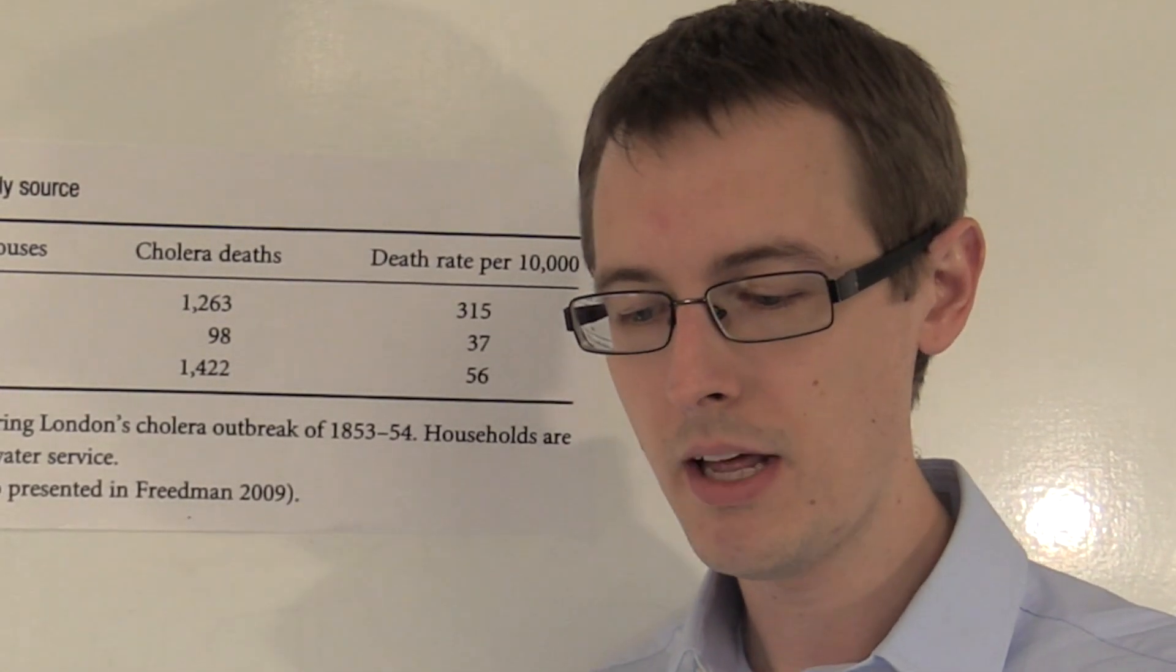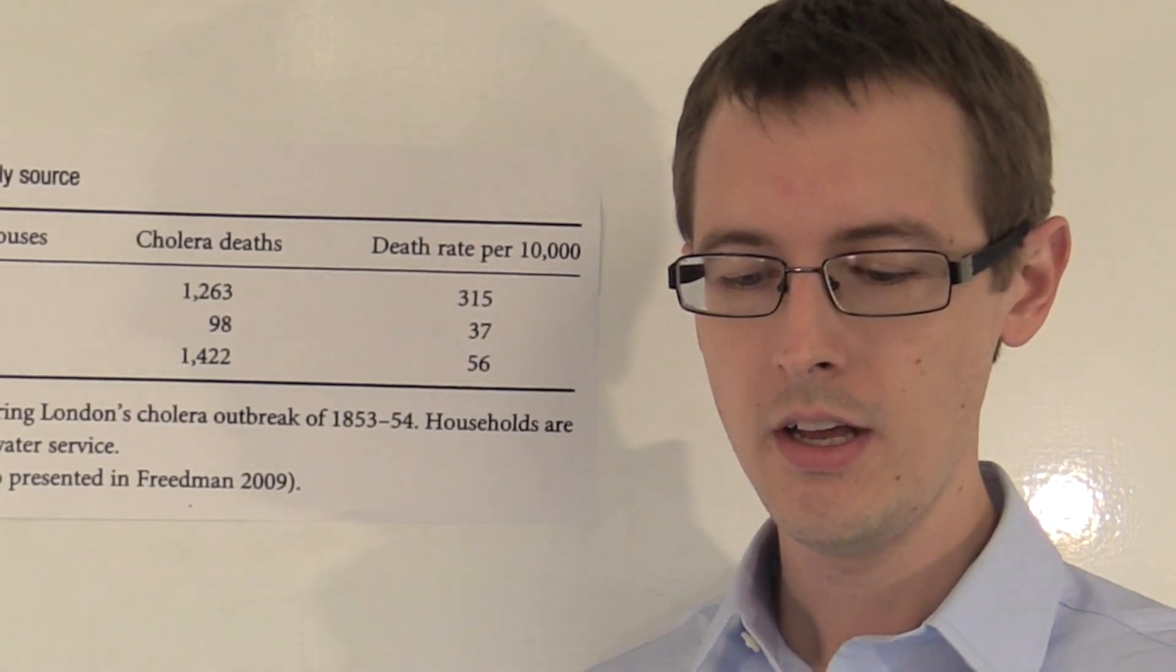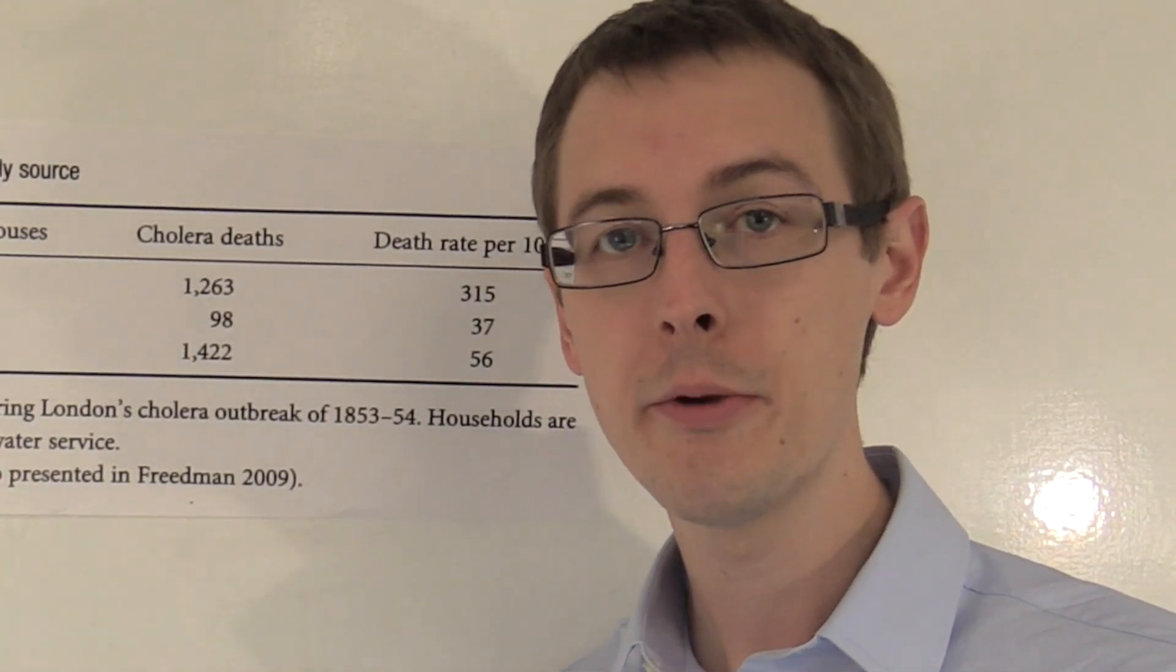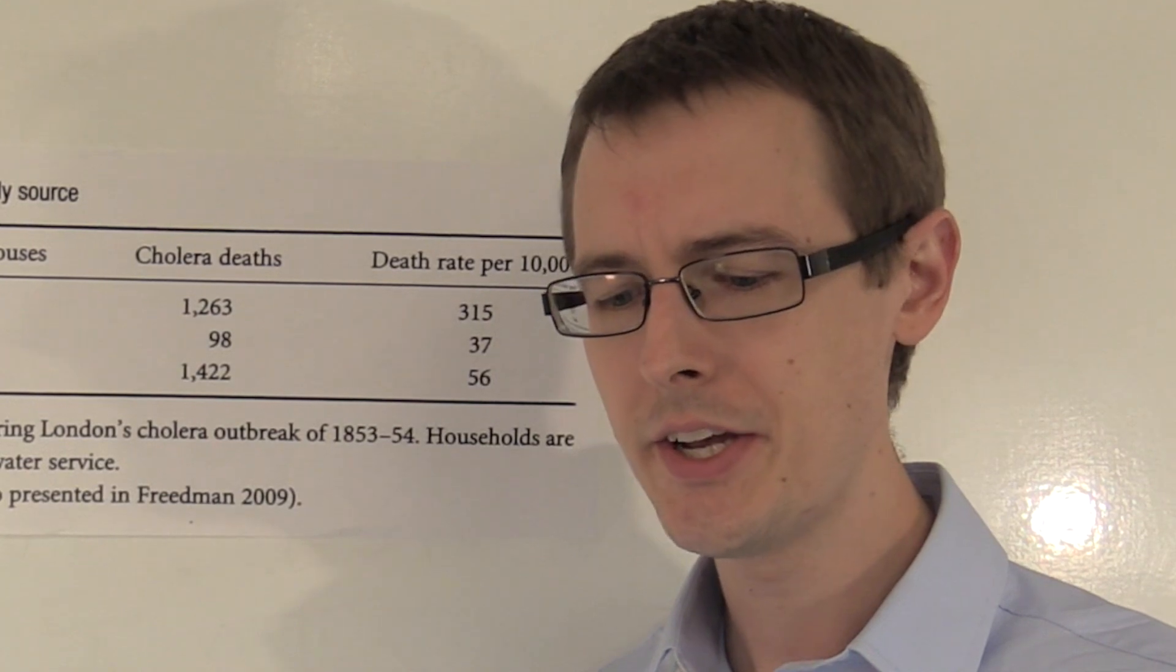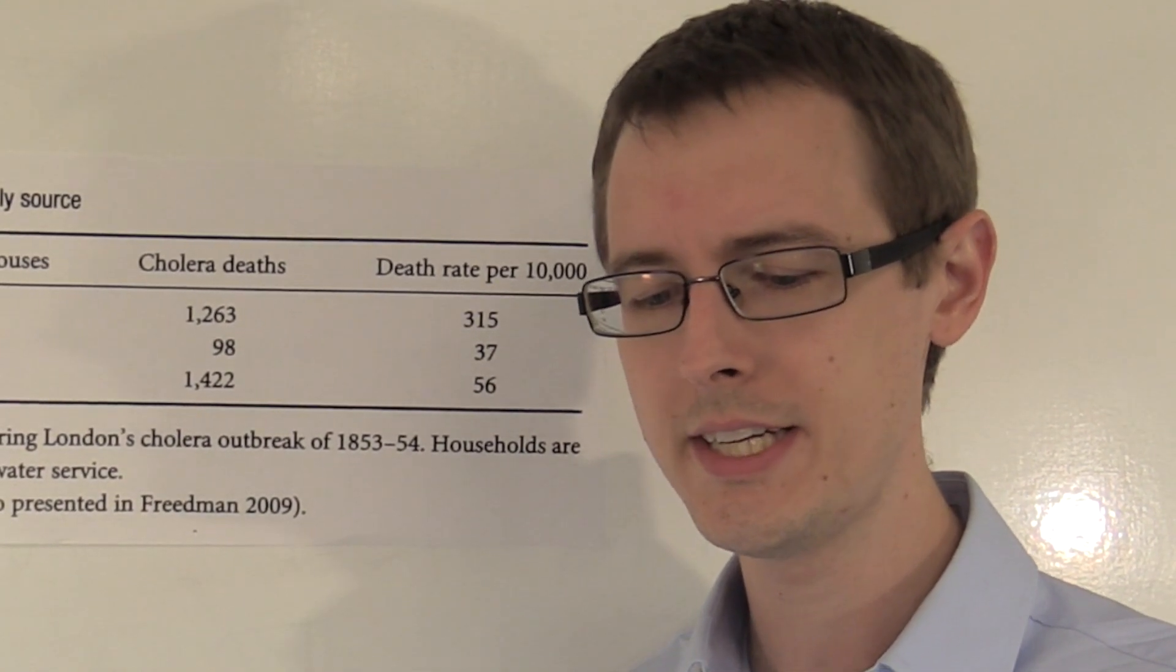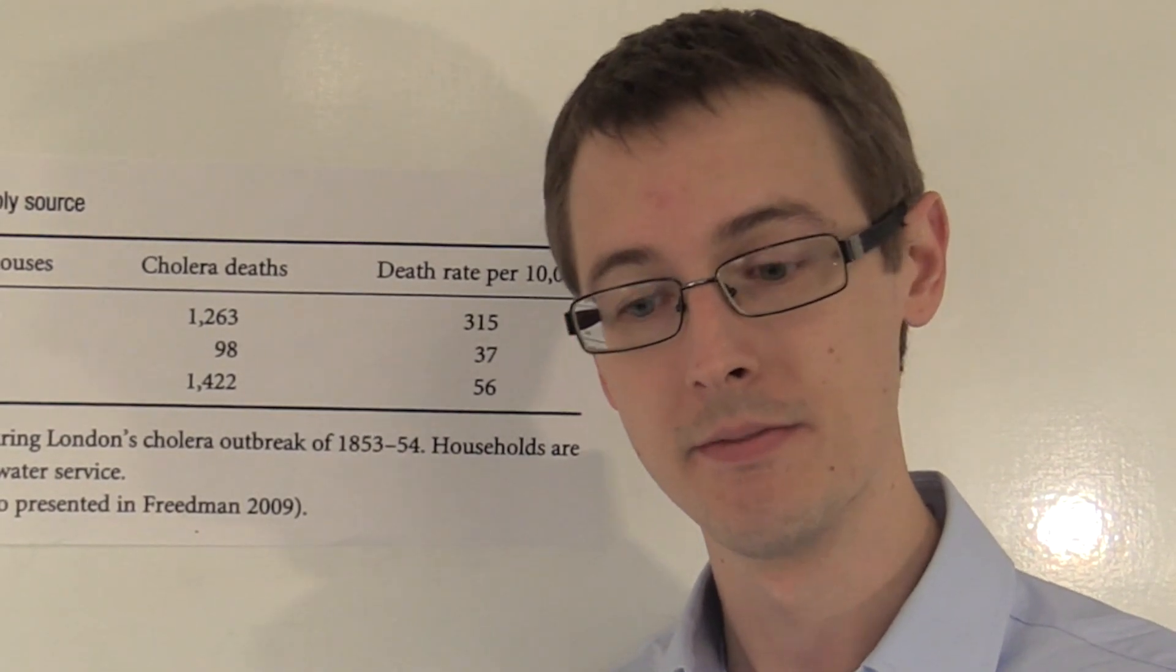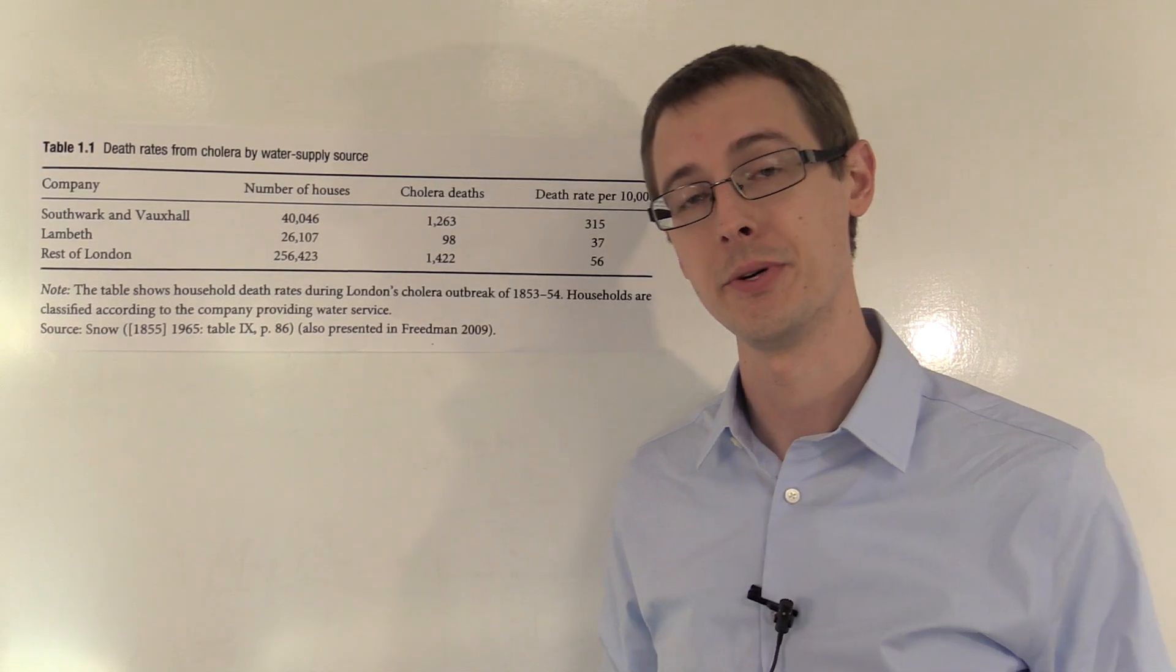Quote, each company supplies both rich and poor, both large houses and small, and there's no difference in either in the condition or occupation of the persons receiving the water of the different companies. It is obvious that no experiment could have been devised which would more thoroughly test the effect of water supply on the progress of cholera than this. That's John Snow speaking in 1855 after doing this analysis.